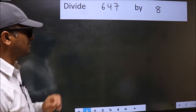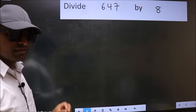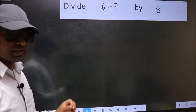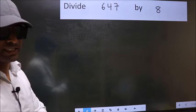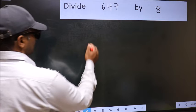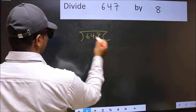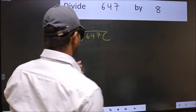Divide 647 by 8. While doing this division, many do this mistake. What is the mistake that they do? I will let you know, but before that we should frame it in this way: 647 and 8 here. This is your step 1.